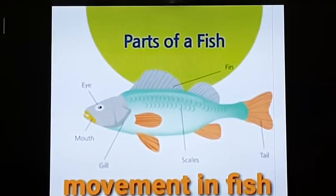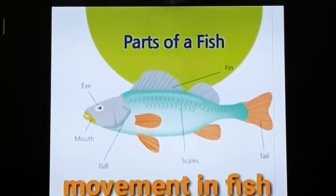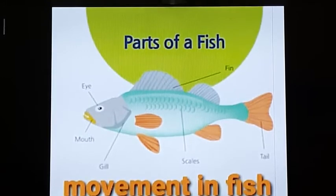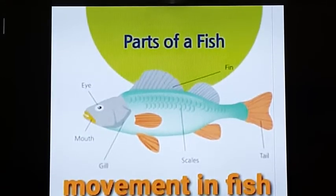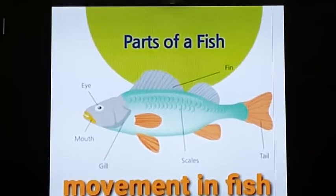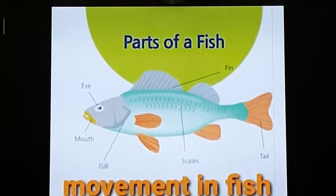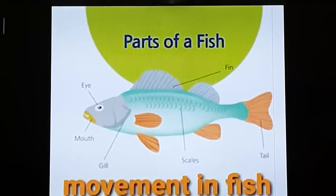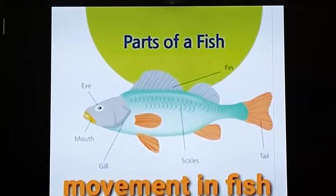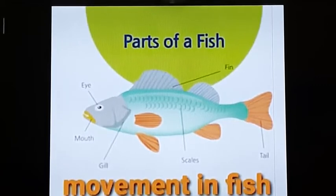Now we will discuss the movement of aquatic animals. Aquatic animals have special organs for movement — they have fins. Fins are present in fishes. A fish has paired fins which help in movement and balancing. Two paired fins help the fish to swim and move forward. The unpaired fin helps in balancing the body, and the tail fin at the back helps to change direction while swimming.